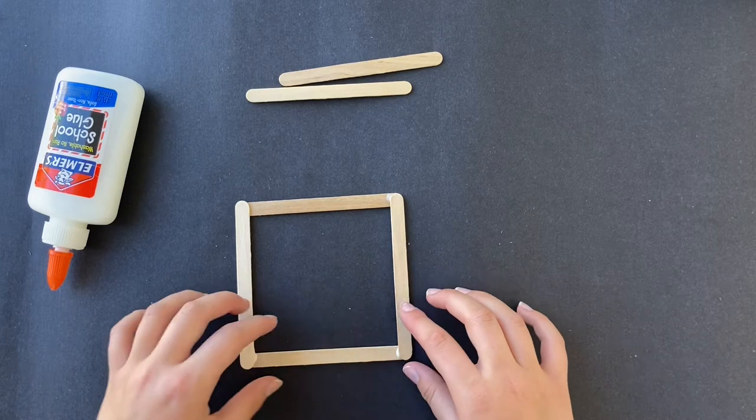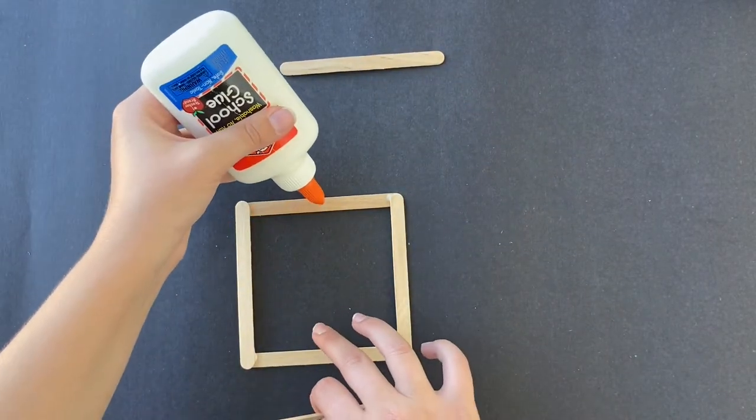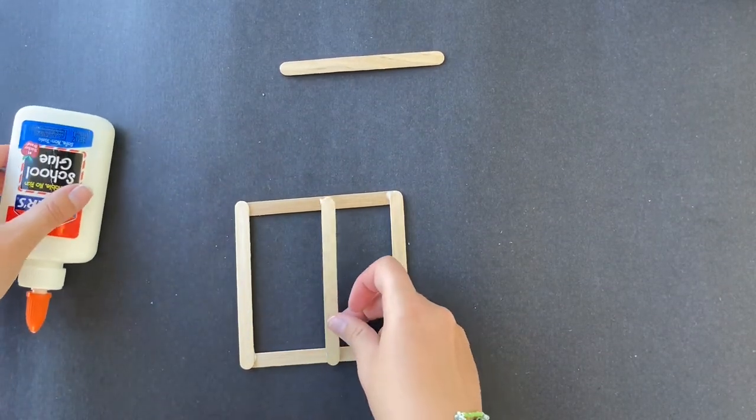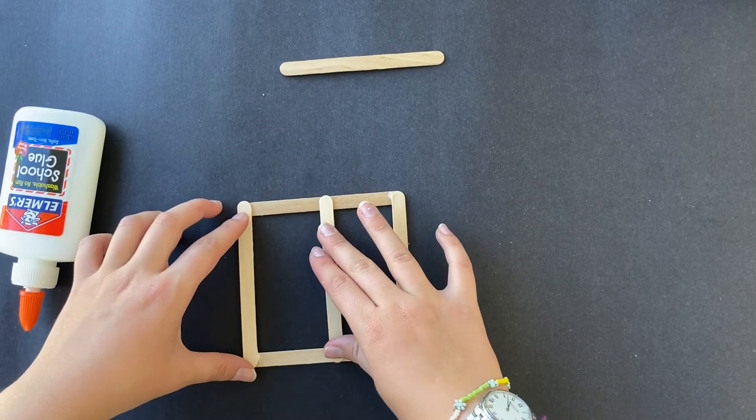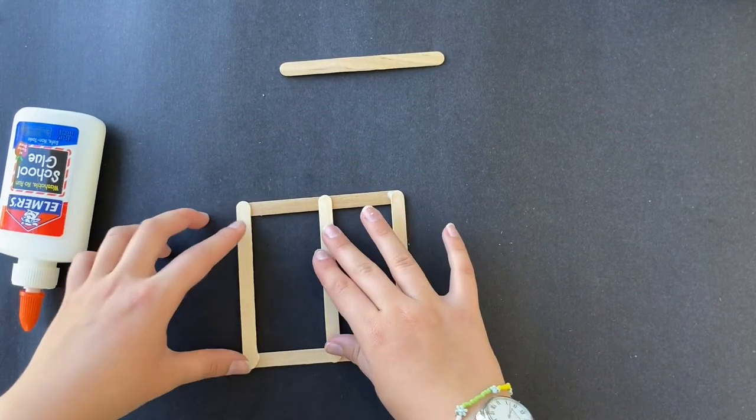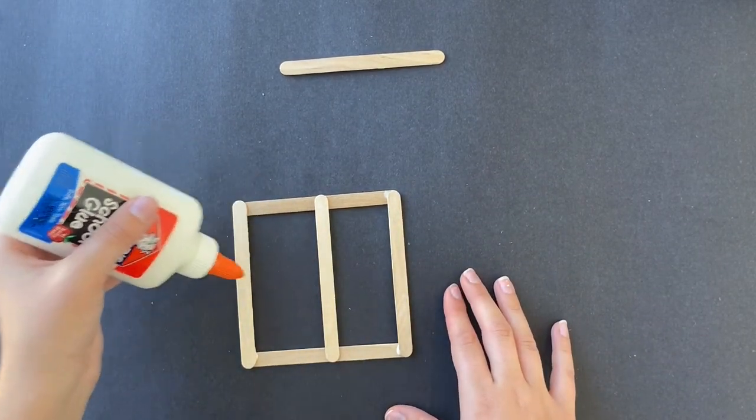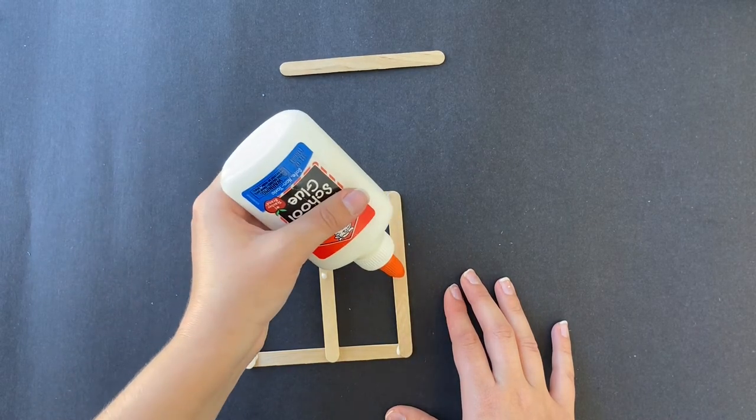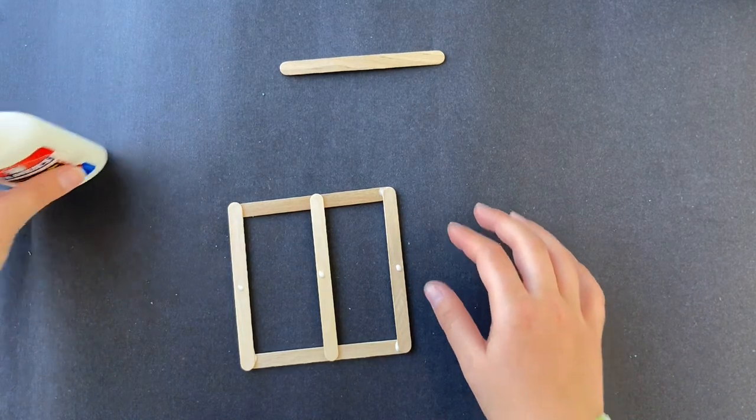Now I'm going to put a small dot of glue in the middle of each horizontal stick and put another stick vertically in between those. Then I'm adding small dots of glue on all three vertical sticks, and I'm going to be putting this last stick here horizontally across the entire window frame.